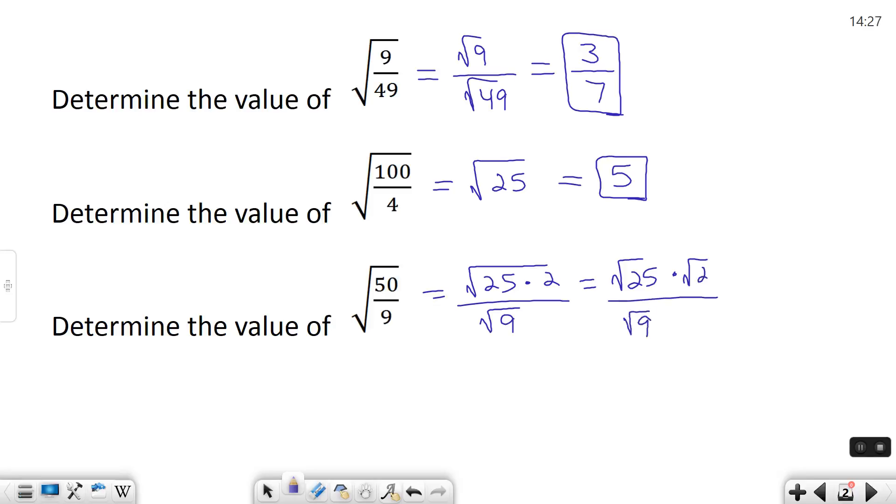Now what happens is, now I know the square root of 25 is 5. I just found it in my last problem. And the square root of 2 is just, again, it's some weird decimal. It's like 1.41 something something. So I can leave that as it is.